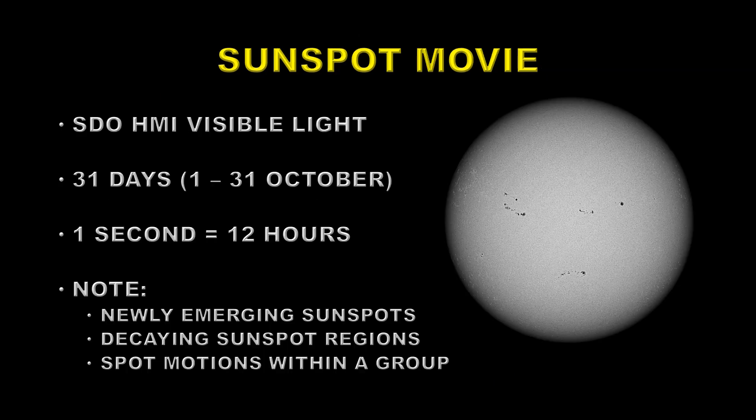Let's take a look at a movie of the sunspots. This is from the Solar Dynamics Observatory HMI instrument and it's 31 days long, basically through the month. One second equals about 12 hours. Look for newly emerging sunspots, decaying sunspot regions — which you'll see somewhat more of during this month than before — and also spot motions within a group, which usually indicates some level of flaring activity.